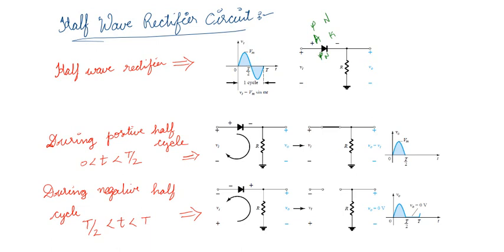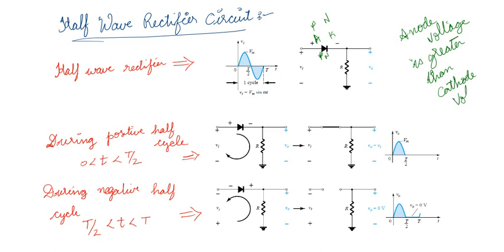When the input is positive — this is an alternating waveform — the positive side is your positive half, and this is your negative half. We know a diode is forward biased when the anode voltage is greater than the cathode voltage. Then the diode acts as a closed switch. We will take two cases: positive half cycle (time between 0 and T/2) and negative half cycle (time between T/2 and T).